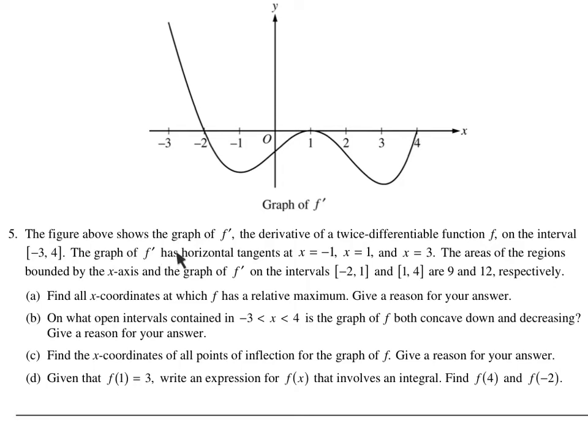The graph of f prime has horizontal tangent lines at negative 1, 1, and 3. Can you tell that right there, right there, and right there have slopes of 0? That's what a horizontal tangent line is saying — slopes of 0 there. In AP questions they're very detailed, writing exactly so you don't question anything. That's exactly where the slopes of 0 are.